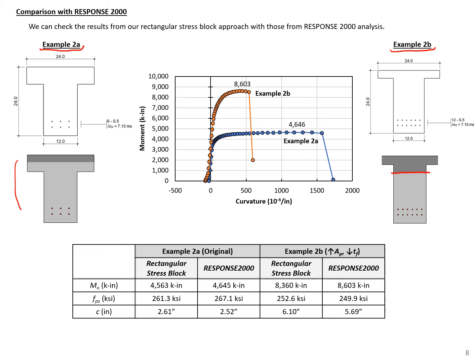Looking at the moment-curvature diagrams for our two different cases, you can see that when we increase the amount of prestressing steel and the compression block falls into the web, we do increase capacity, but we also decrease the ductility of our section. The results comparing our rectangular stress block to Response 2000 are within 5%, so it's a reasonable approach. A rectangular stress block approach is a reasonable way to estimate the ultimate capacity. That concludes this example.